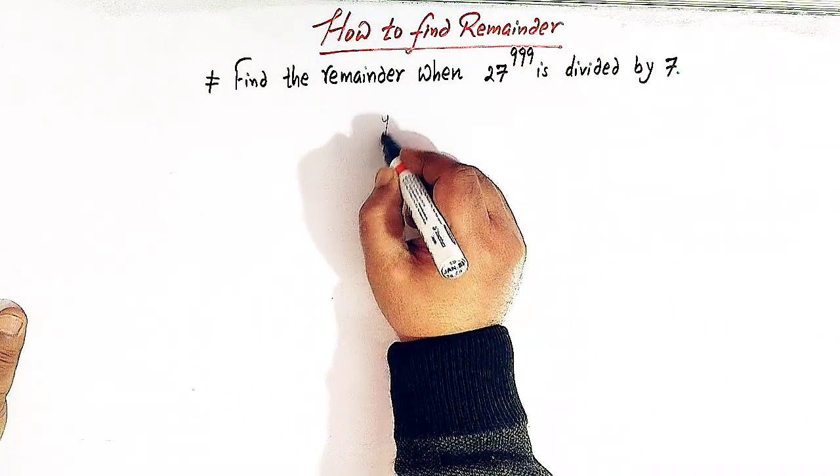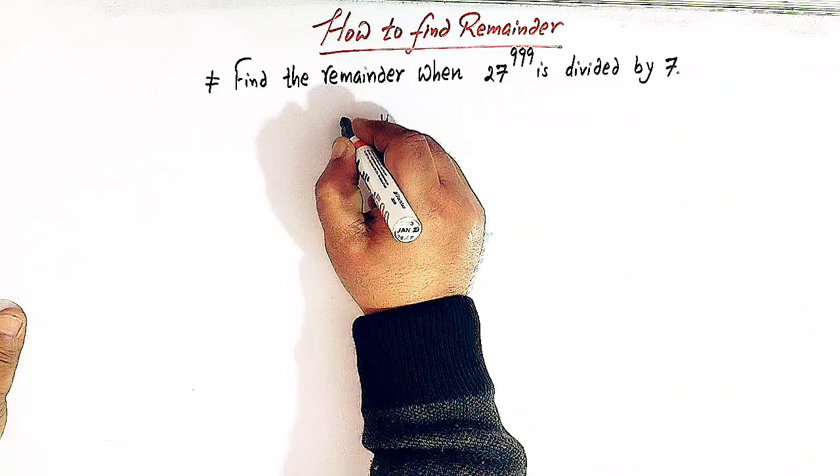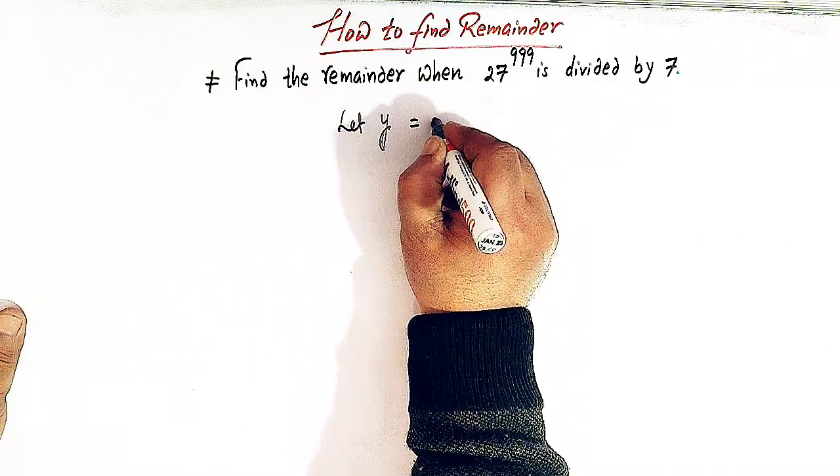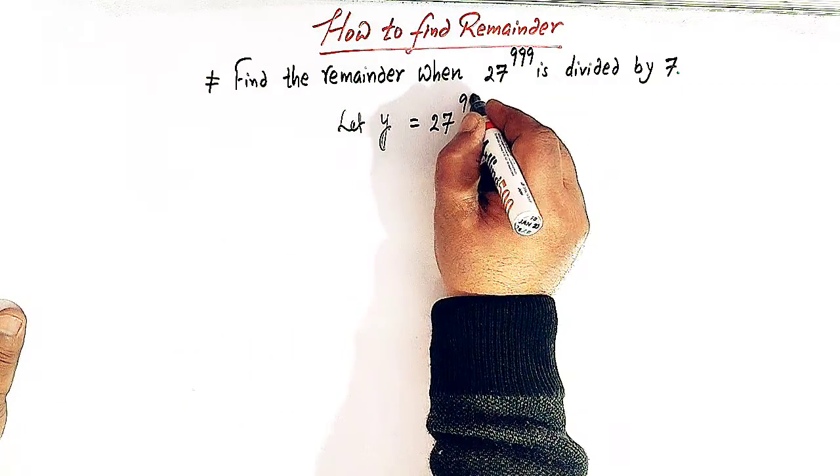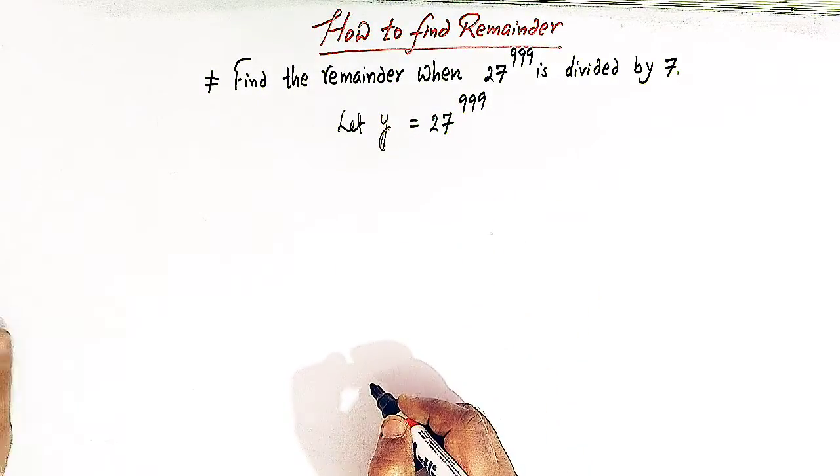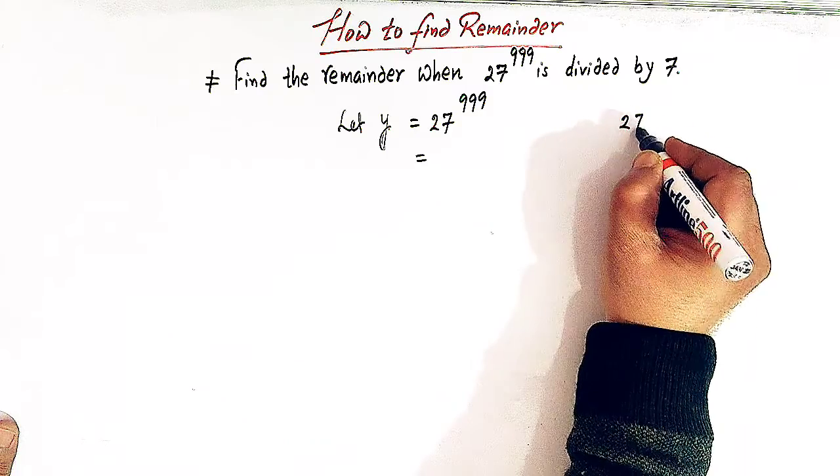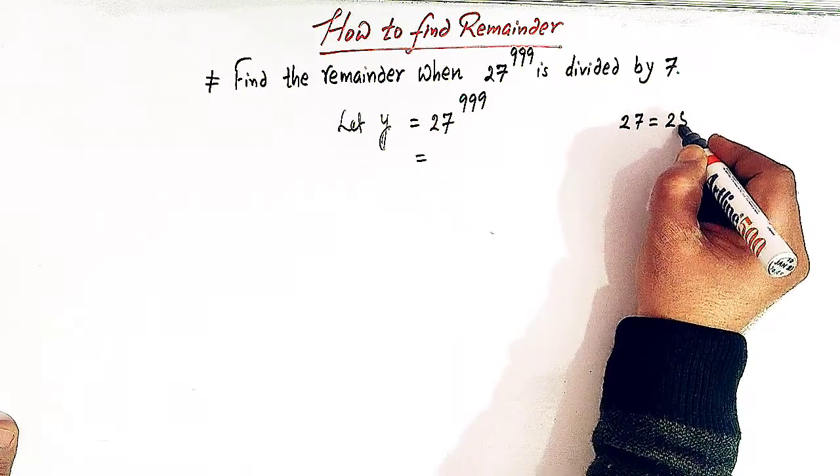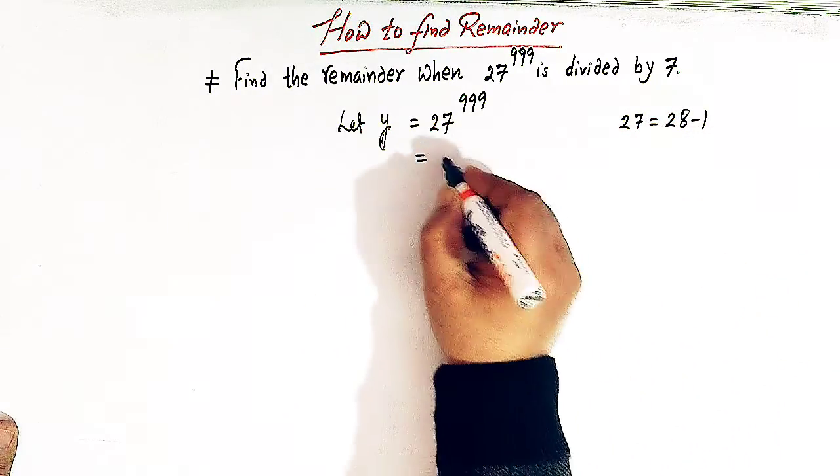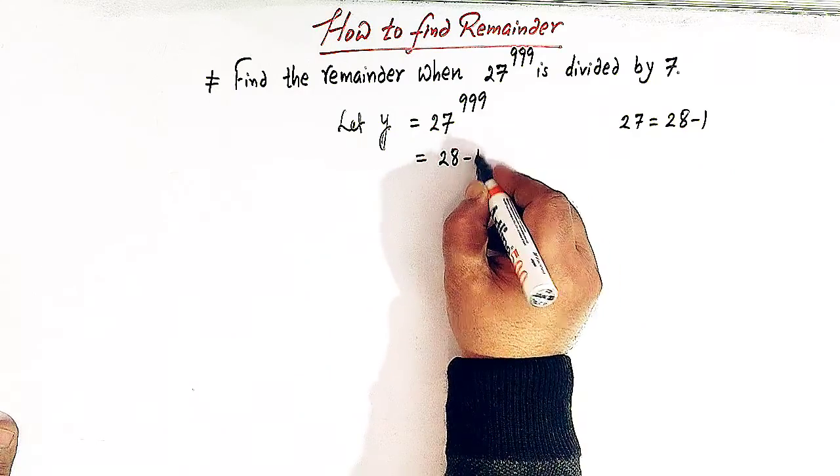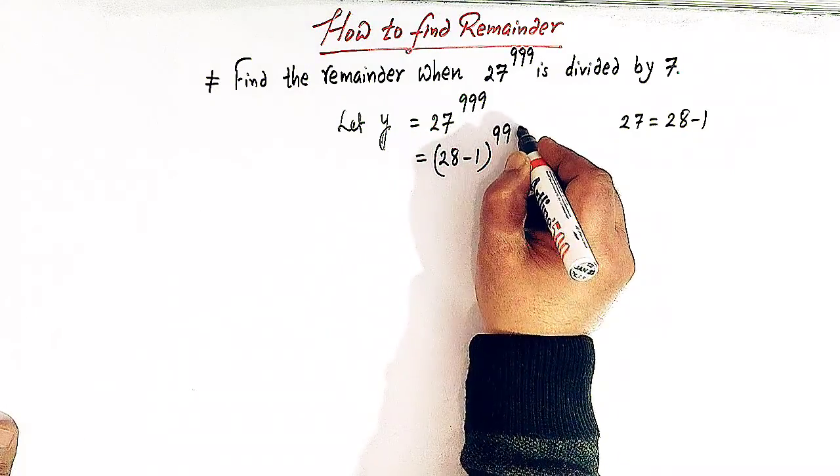We will follow the steps. We can take y is equal to 27 raised to 999. Now, 27 can be written as 28 minus 1. So we can write here 28 minus 1 raised to 999.